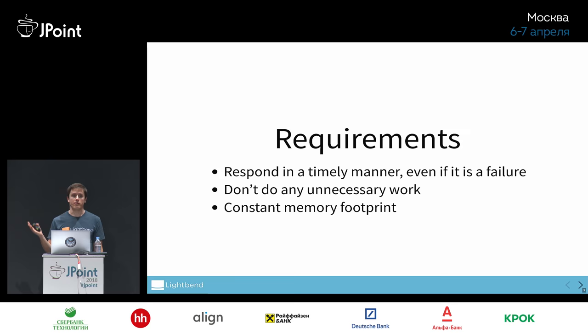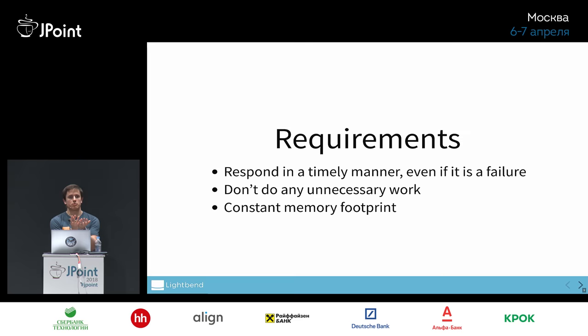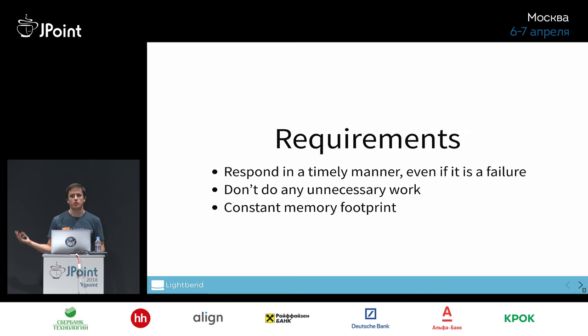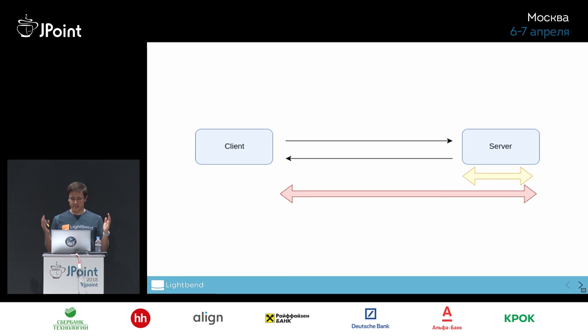A couple of requirements: we want to respond even if it's a failure — I'd rather have a 503 after a given amount of time than wait indefinitely when my database is slow. I don't want to do unnecessary work: if the client slows down, we don't want to keep hitting the database. And I want to do it with a constant memory footprint regardless of the payload size. During the demo we'll do it with a small number of threads and a 128 or 256 megabyte heap, even though the responses will be very large.